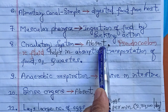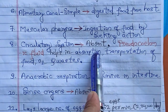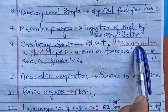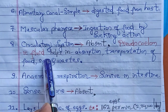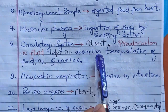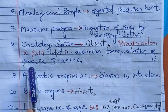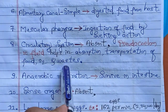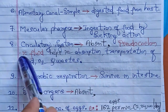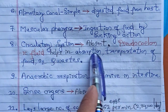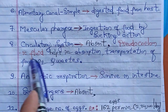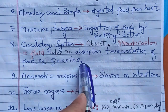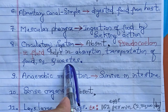The circulatory system is absent in Ascaris, and it is compensated by the presence of pseudocoelomic fluid. This fluid fills the body cavity and helps in absorption and transportation of food and oxygen, as well as the removal of waste from the body.